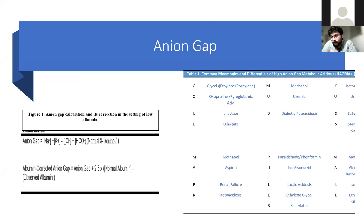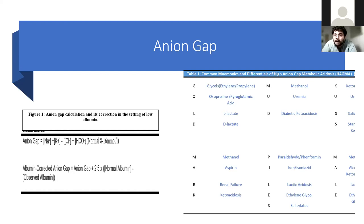There are common mnemonics to remember the causes of raised anion gap acidosis. The common ones to remember include lactate — there are two different types of lactate, both of which can cause high anion gap acidosis. It's L-lactate that we measure in sepsis, but D-lactate is very important particularly in short bowel syndrome and malabsorption issues. Leading causes also include methanol, aspirin, and glycols.